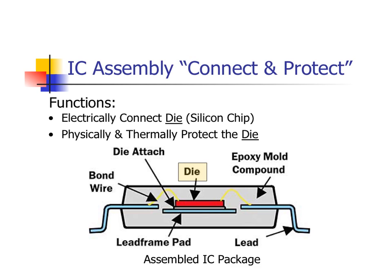The functions of the IC assembly can be divided into two basic areas: connect and protect. Connection refers to the electrically connecting of the die to the system, while protection refers to the measures taken to ensure the system will function properly after manufacturing and throughout the life of the product. We're breaking this down to the electrical interconnections inside—specifically these wire bonds—and how this will allow us to connect it to the circuit board through these package leads.